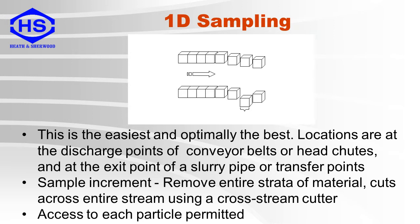Here is an example of 1D sampling. This is the easiest and optimally the best situation. Locations are at discharge points of conveyor belts or head chutes, and at exit points of slurry pipes or transfer points. The increment can remove an entire strata of material or cut across the complete stream. Access to each particle is permitted.